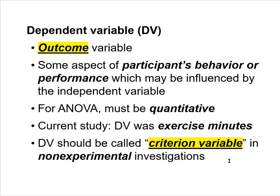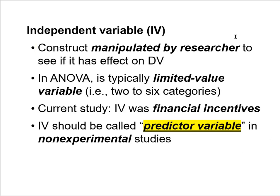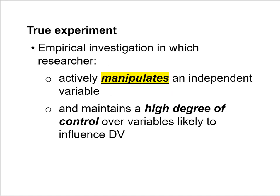An independent variable in a true experiment is the construct manipulated by the researcher to see if it has an effect on the dependent variable. In ANOVA, the independent variable is usually a limited value variable consisting of two to six categories. In the current investigation, the independent variable was financial incentives. If you're conducting a non-experimental study, this variable should instead be called a predictor variable. We try to restrict the terms independent and dependent variable only to true experiments.